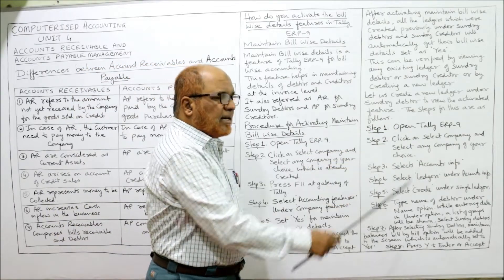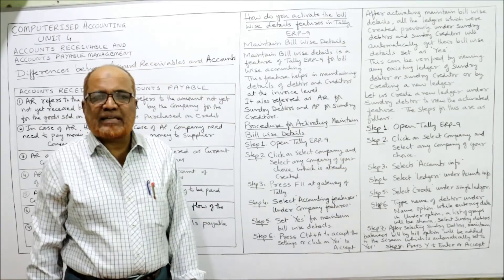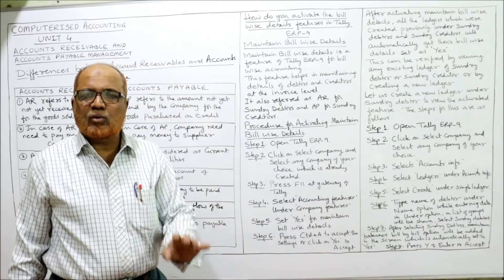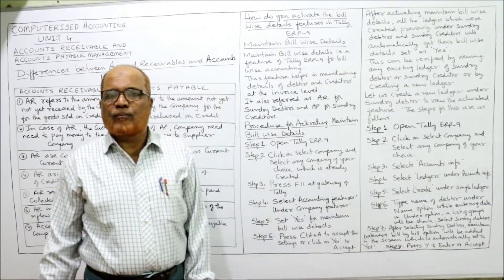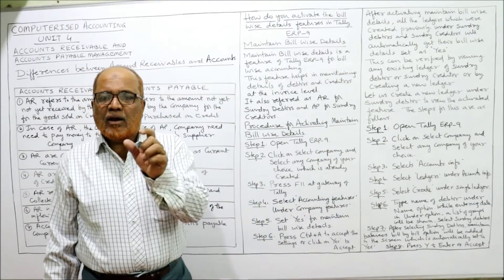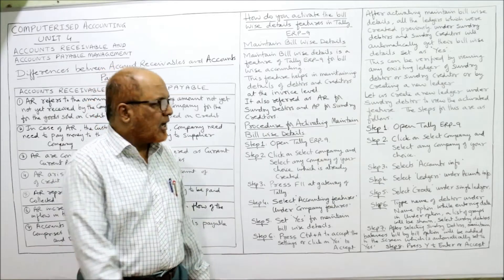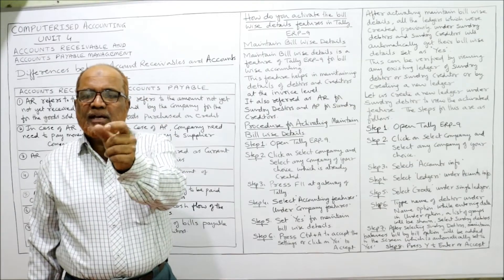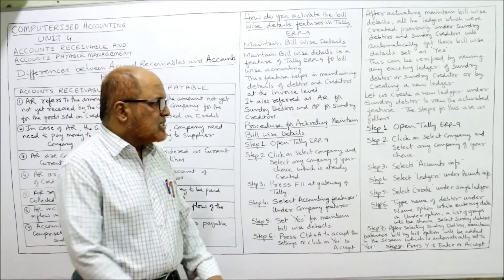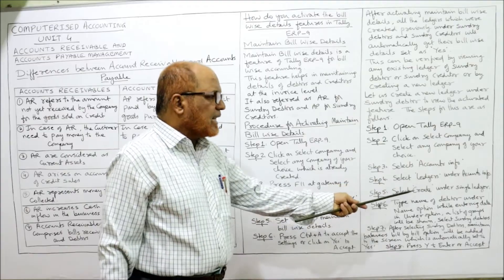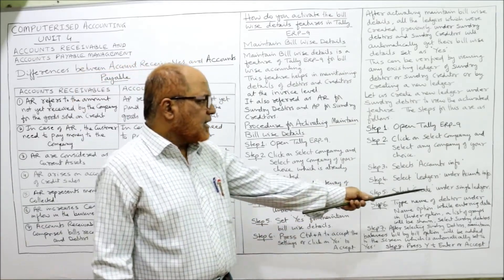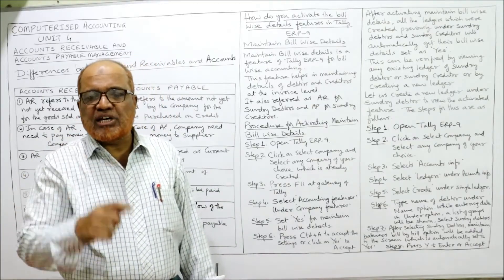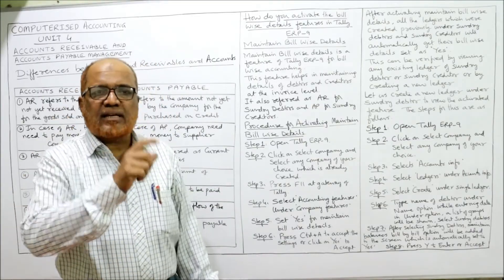Steps to create a ledger account: Step 1 — Open Tally ERP-9, gateway of Tally. Step 2 — Click select company and select your company. Step 3 — Select accounts info. Step 4 — Select ledgers under accounts info. Step 5 — Select create under single ledger.